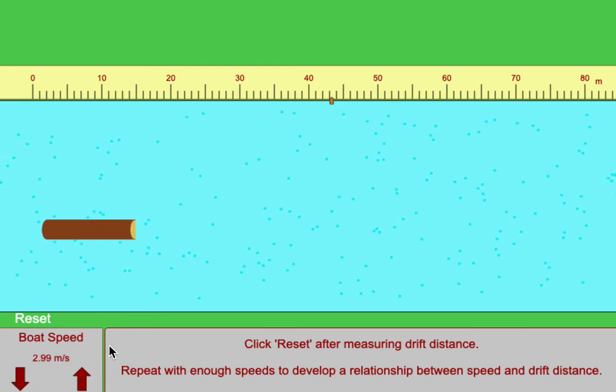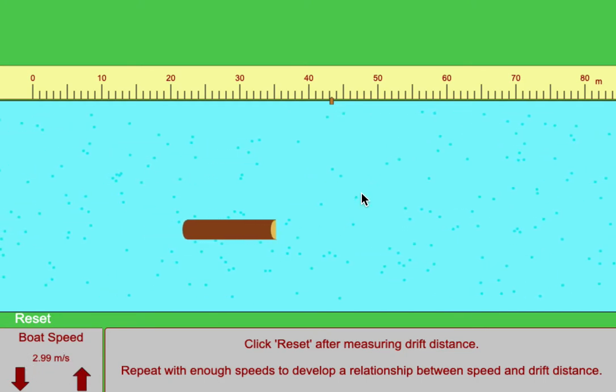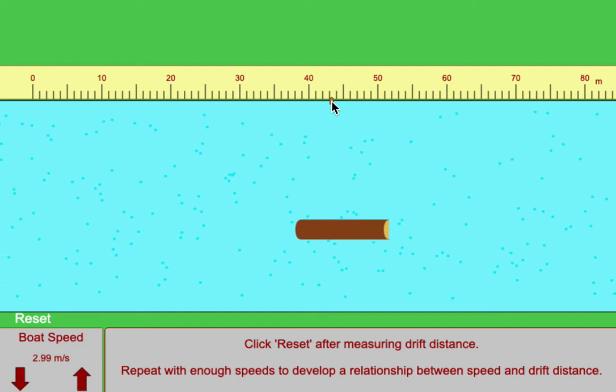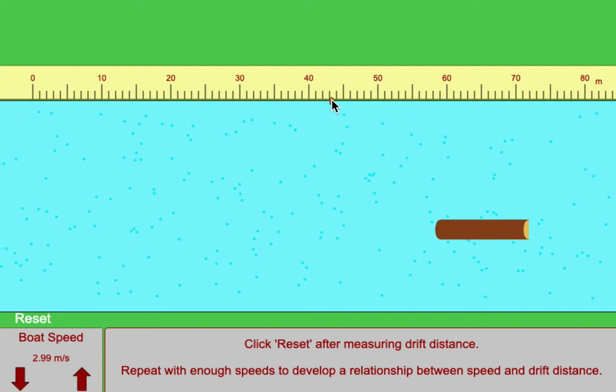Record the speed of the boat. Again, that is the speed if it was in still water. And this is the distance it drifted down the stream. You can see it's a little more than 43 meters, so maybe 43.2 meters.